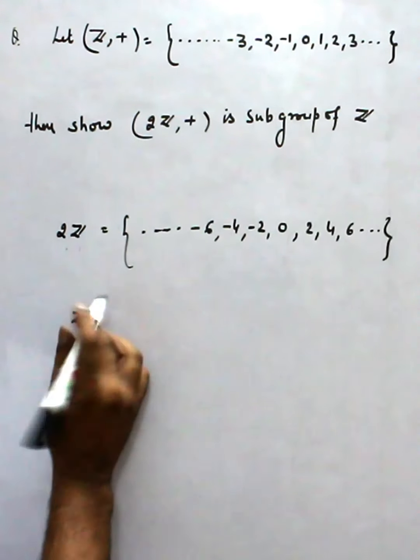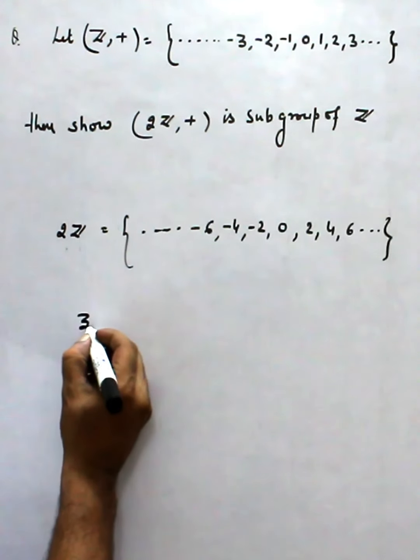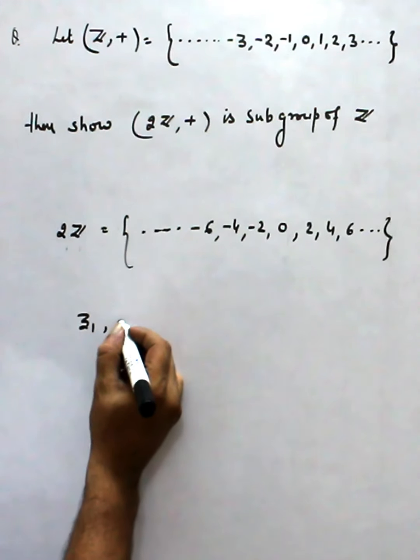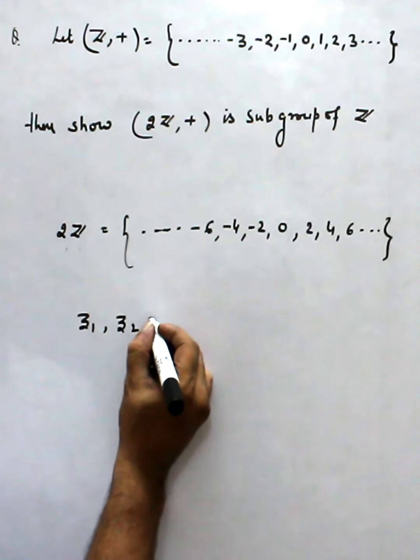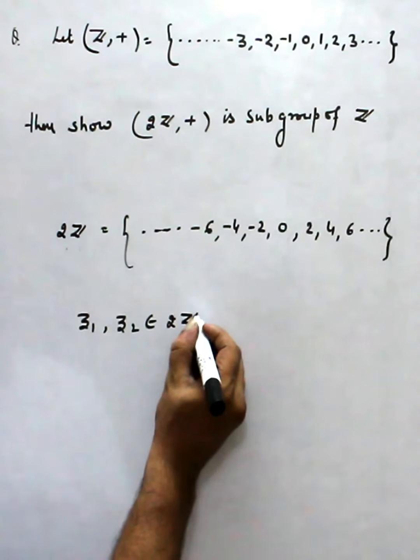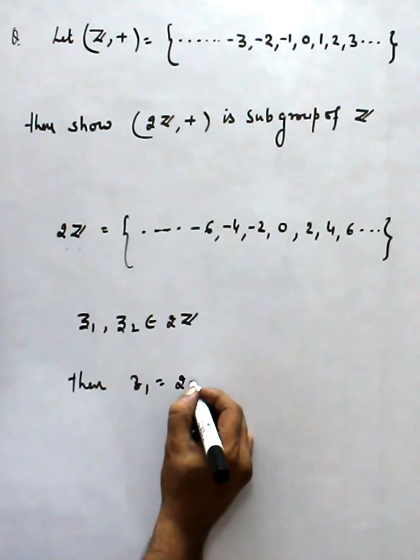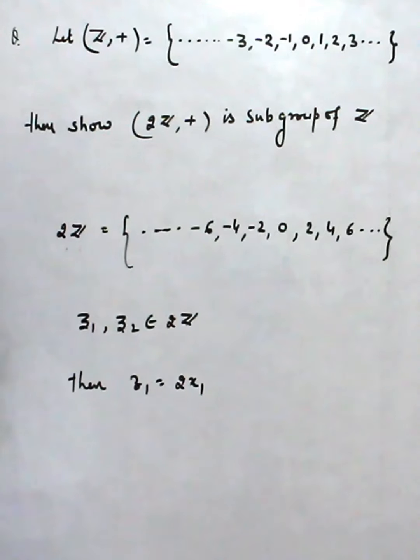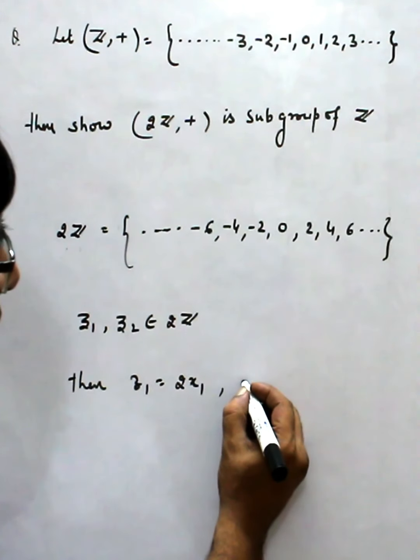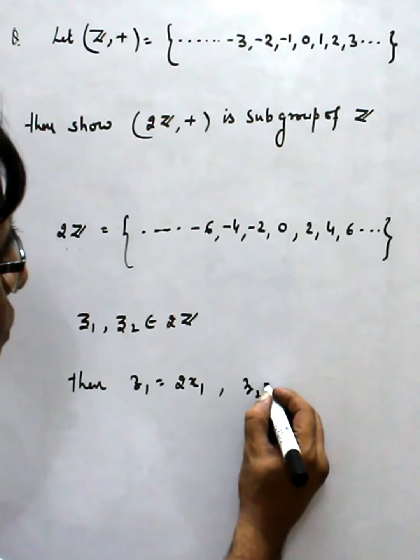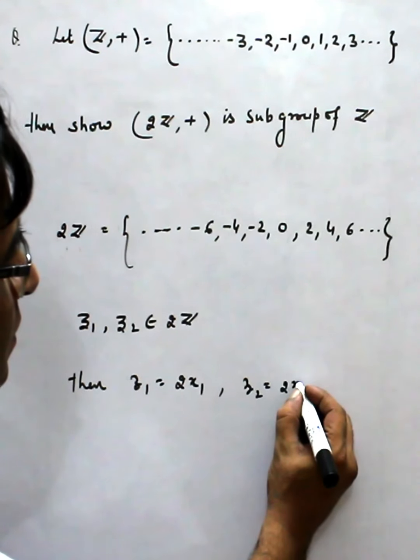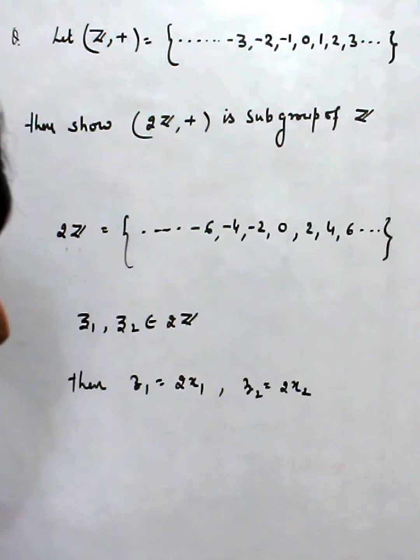Let Z1 and Z2 belong to 2Z. Then Z1 is this type of element, that is, if X1 is there, it's 2 times X1, and Z2 is 2X2.